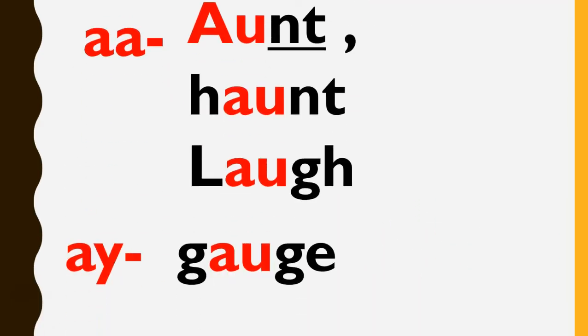Now in these words, AU makes the 'aa' sound. Aunt: a-u-n-t, aunt. Haunt: h-a-u-n-t, haunt.